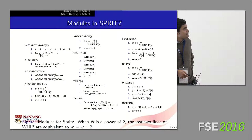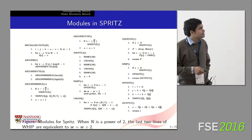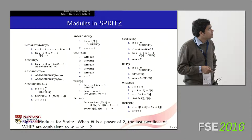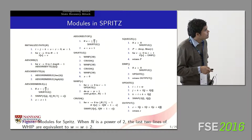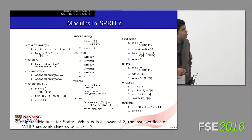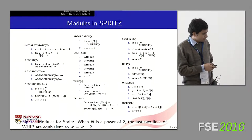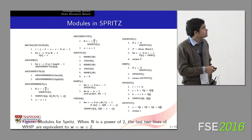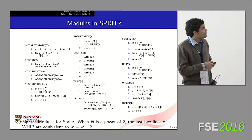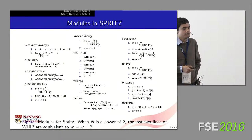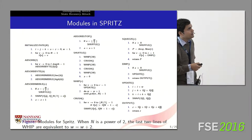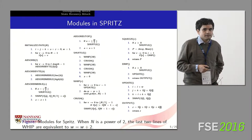The designers described the modes of operation in Spritz in terms of 13 separate modules. To begin with, they have an array S, and they initialize this array S to the identity permutation over Z₂₅₆ — that is, the ring of integers modulo 256.